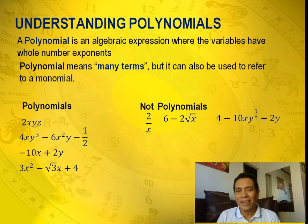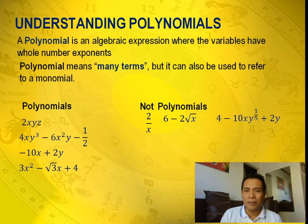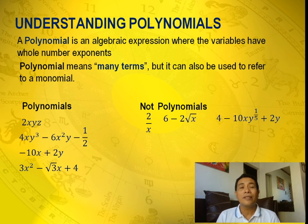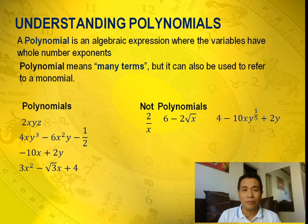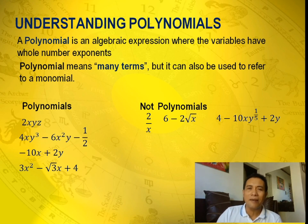4 minus 10xy raised to 1 fifth plus 2y. This is not an example of a polynomial because in one term, the exponent of variable y is 1 fifth. And 1 fifth is a fraction — it's not a whole number. So that's not an example of a polynomial.